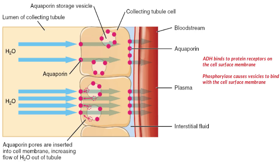These protein receptors are transmembrane proteins and cause changes inside the cell. This activates the enzyme phosphorylase. Phosphorylase causes vesicles to fuse with the cell surface membrane. These vesicles contain bits of cell membrane with aquaporins attached to them. Aquaporins are channel proteins that allow water to pass through them.